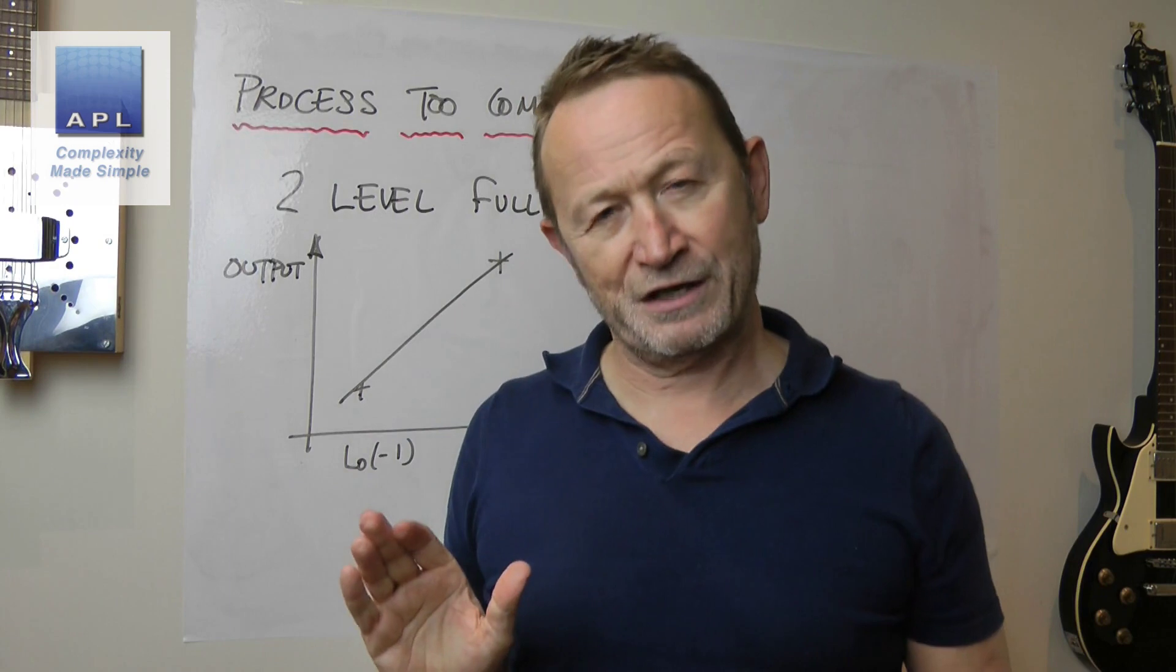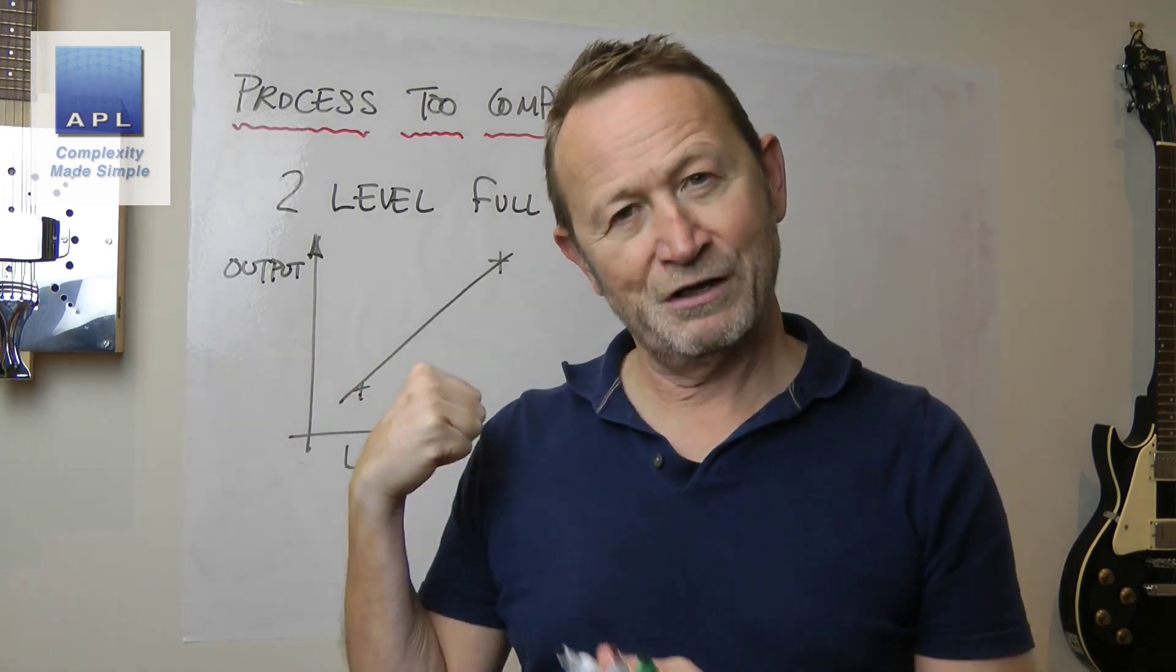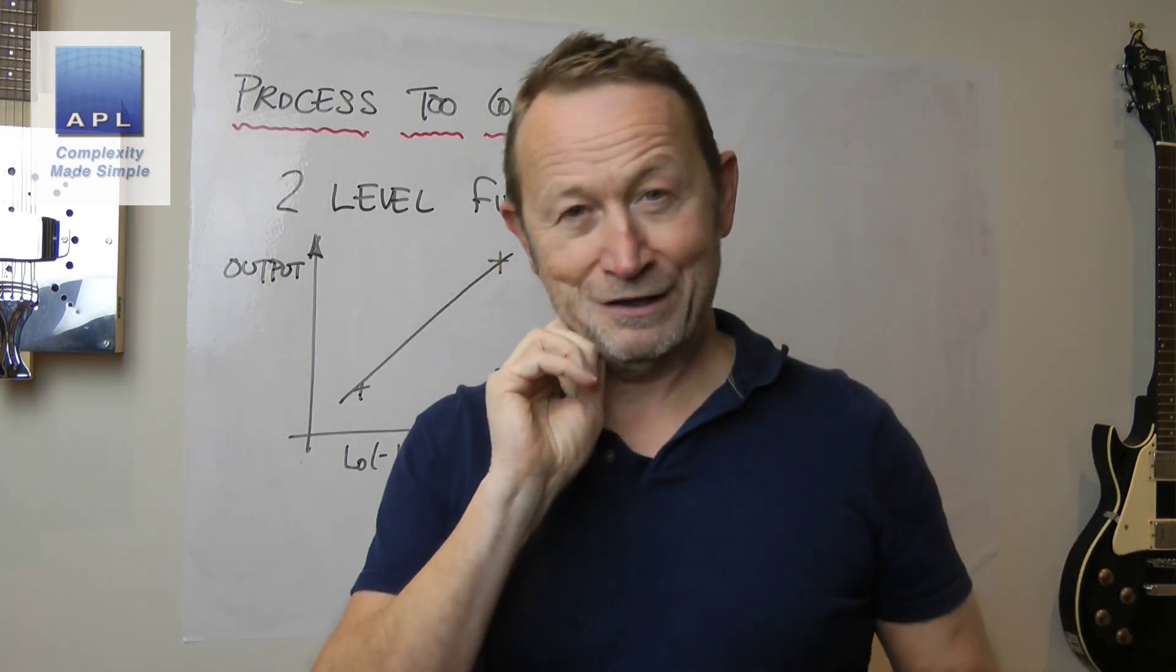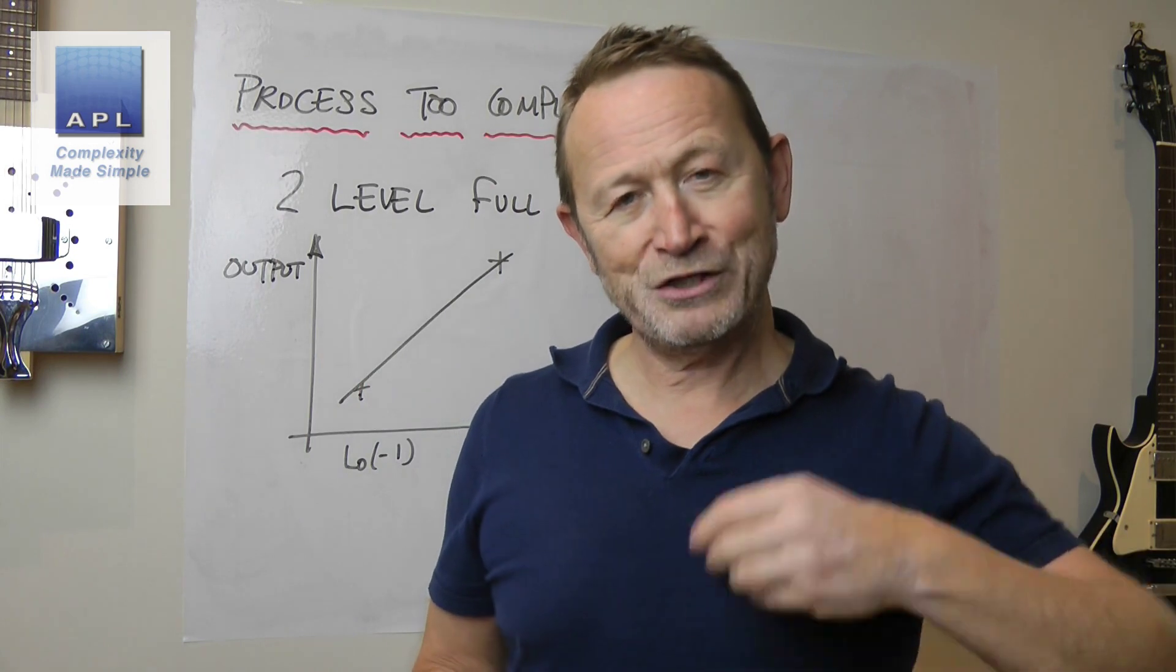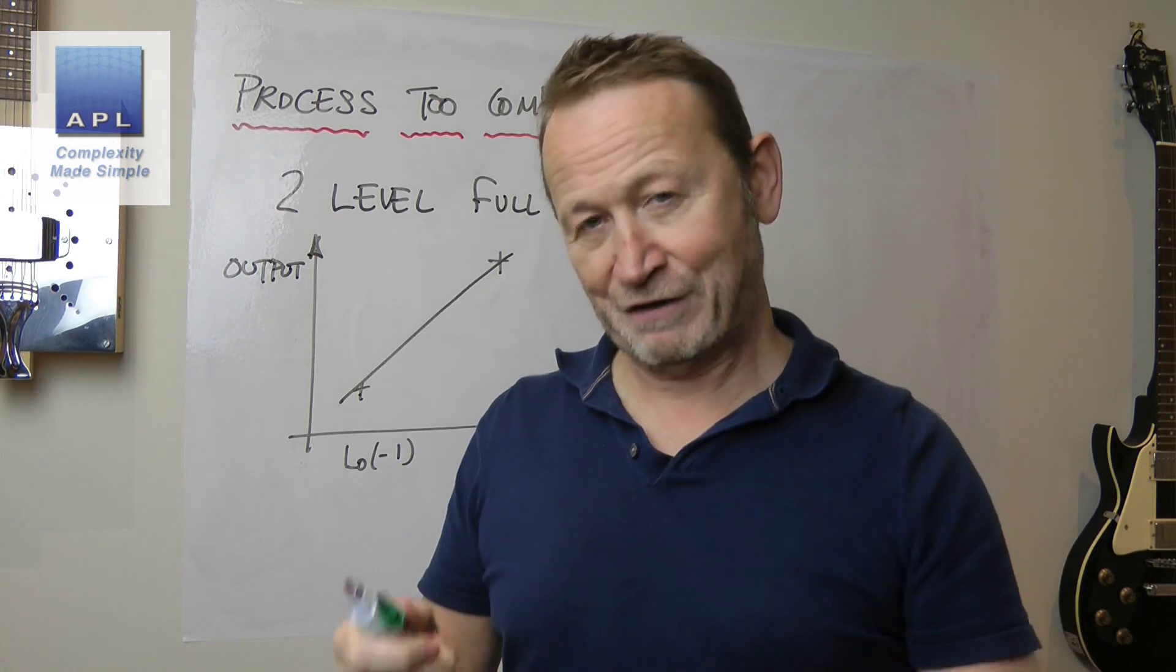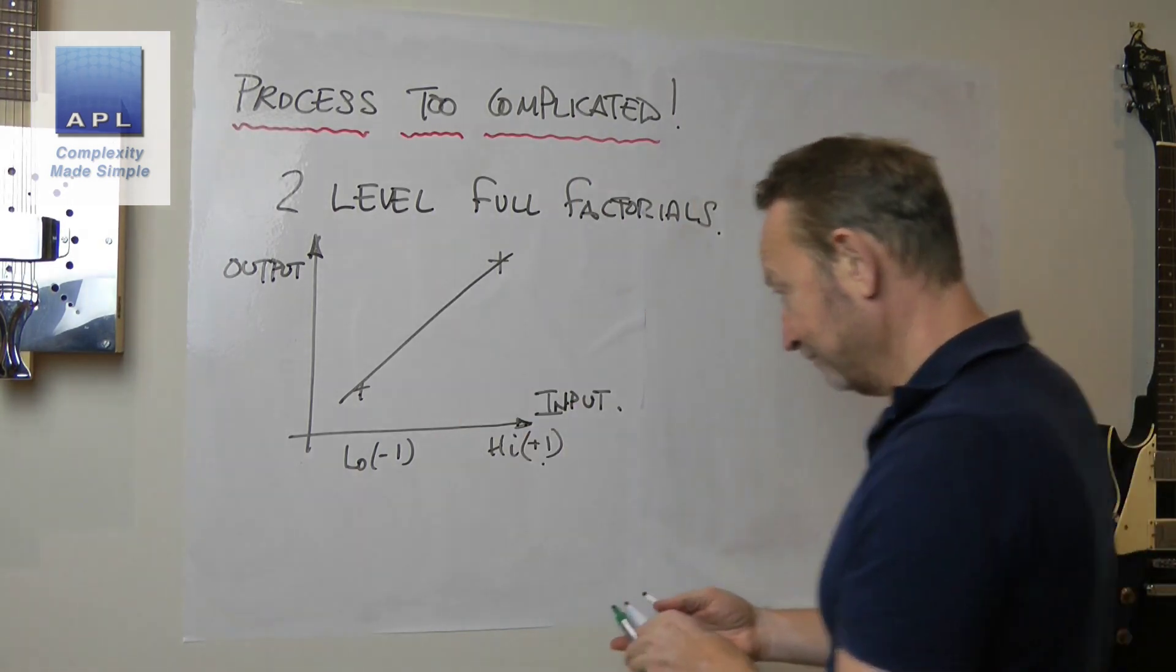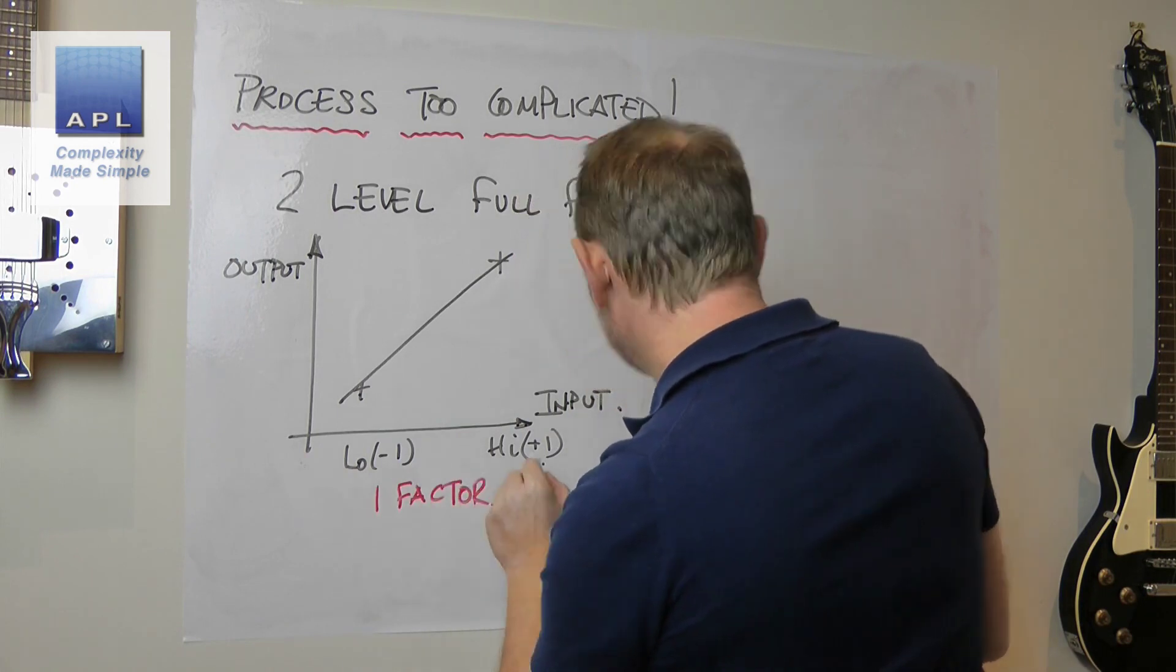But the reason why you think that is because you're seeing this as a two-dimensional drawing on a piece of paper, but this thing, this two level full factorial is so much more complicated than that when you start to add two, three, four, five, six variables. So let me show you, that's obviously one factor. That's a one factor drawing.